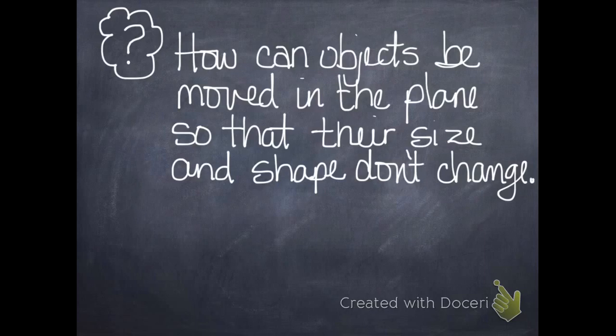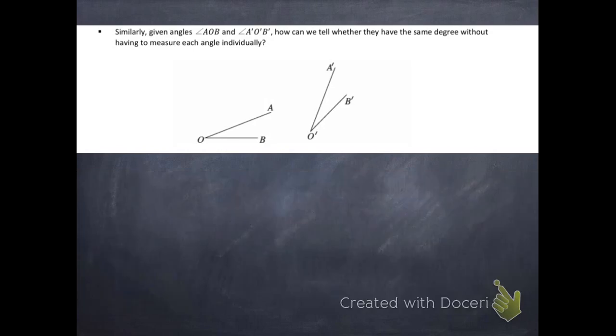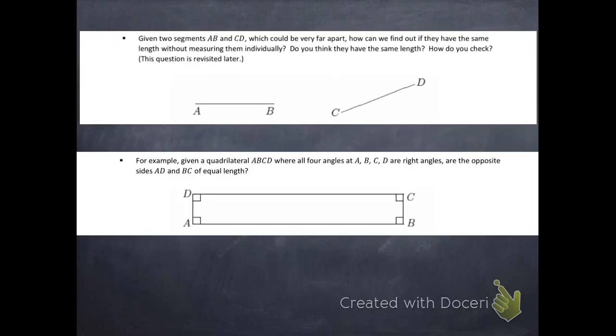So the question is, how can objects be moved in the plane so that their size and shape don't change? Because in each of these situations that we just looked at, if we could move those objects in such a way, and we need a rule, a mathematical rule for how to move them, if we could do it in such a way that their size and shape did not change, the angle size, the distance between points in a segment, if we could know that those weren't going to change, then we could move them on top of each other and see if they coincide, if they're the same sizes of segments and angles.